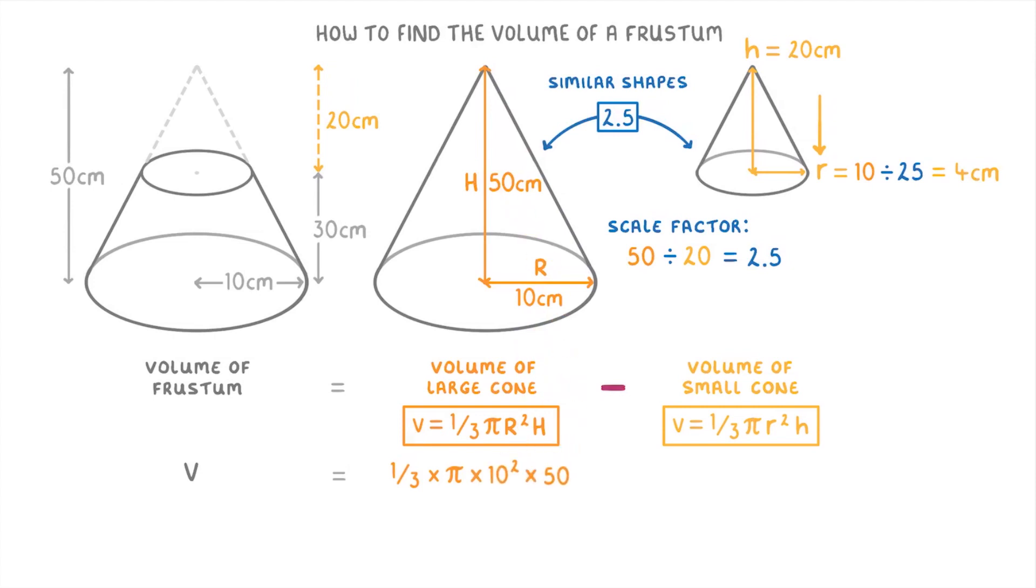Take away the volume of the smaller cone, so one-third times pi times the radius of 4 squared times the height of 20. And if you're doing that by hand that will simplify down to 5000 over 3 pi minus 320 over 3 pi.